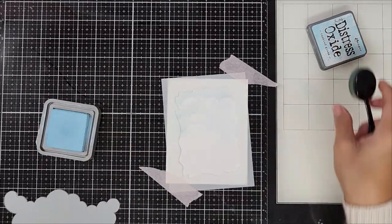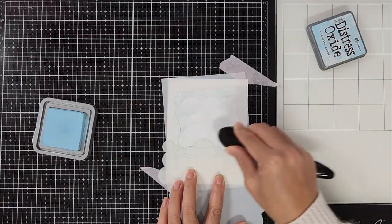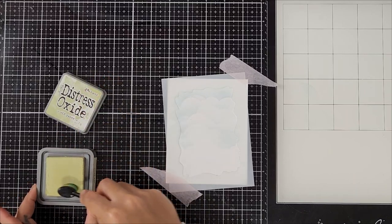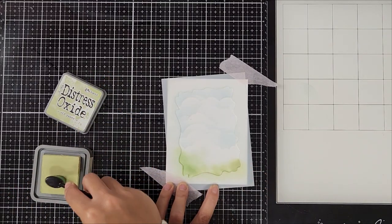You can see that I'm going back and forth and using my cabin that I die cut out earlier just to get a better idea of where I should stop. Once I figured that out, I went ahead and got some green colored ink and blended that down towards the bottom of the card stock.